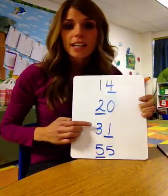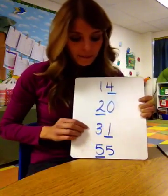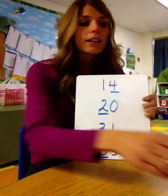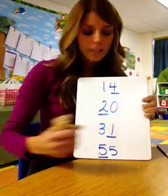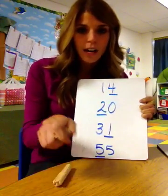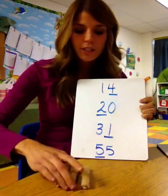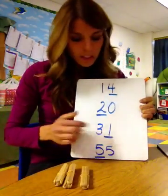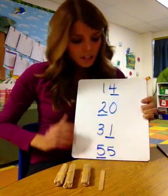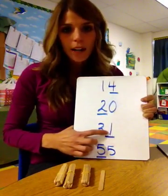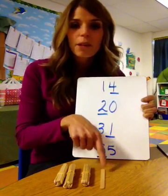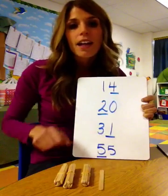Let's move on to the next number — thirty-one. We're looking for the value of this one in thirty-one. Let's make our bundle sticks. How many groups of ten do I need? Three, great job — one, two, three. Here's three groups of ten. And how many ones do I need? That's right, just one. So what is the value of this one? The value of one is one, because this is how many ones we have. Very nice.